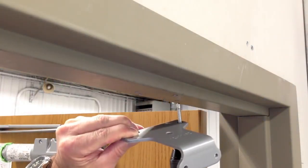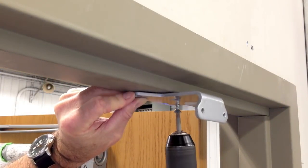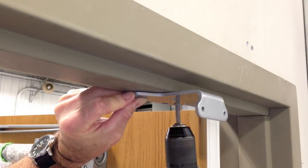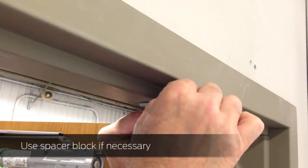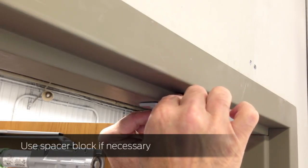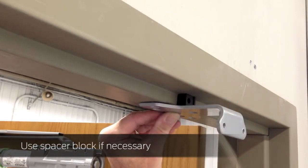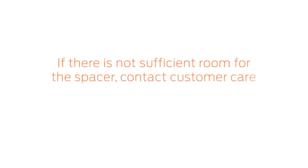Attach the parallel arm shoe to the frame with the five screws. When installing the fifth screw, you may need to use the spacer block. The spacer block will typically be necessary, but if the fifth screw fits into the soffit, the spacer is not needed. If there is not sufficient room for the spacer, contact customer care.